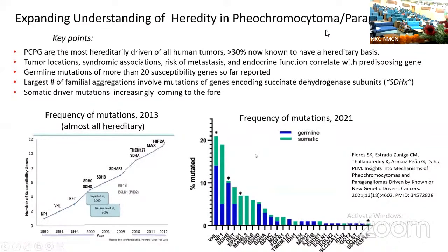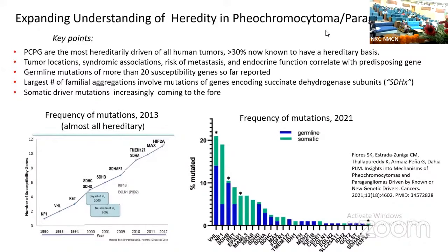An additional new development is that somatic mutations have come increasingly to the fore. If we look at the combined frequency of germline and somatic mutations for different tumor types in 2021, VHL, NF1, and RET are still common, but somatic mutations of NF1 are even more common than germline mutations, and somatic mutations of VHL and RET are also not infrequently encountered. Interestingly, somatic mutations of HIF2-alpha (EPAS1) are overwhelmingly predominant, and if any germline mutations exist at all, they are extremely uncommon, and the exact reasons for this difference are not clear.